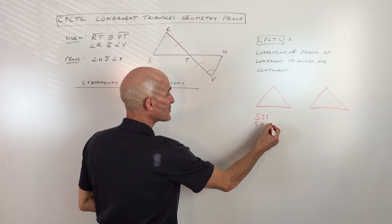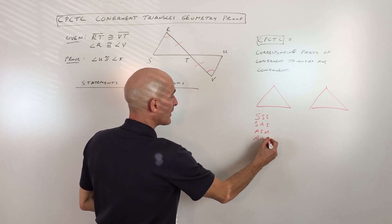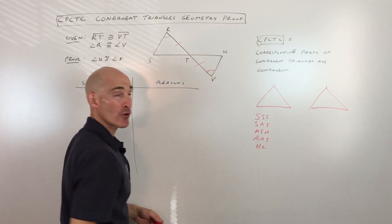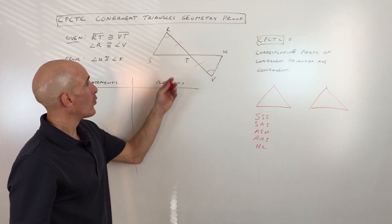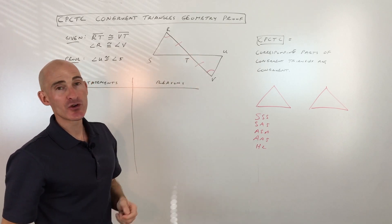you learn that there's five different ways to prove triangles congruent. You can use side-side-side, angle-side-angle, side-angle-side, angle-angle-side, or hypotenuse leg if they're both right triangles. So which one of these can we use to prove that these two triangles are congruent?